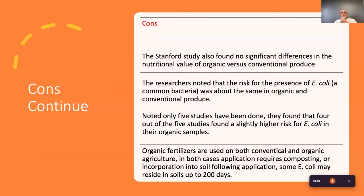Another con from the Stanford study: no significant difference in nutritional value versus conventional foods. Researchers also noted that the risk for E. coli presence was pretty much the same for commercial versus organic agriculture in a small study of five studies. E. coli is fecal coliform bacteria, very common in manures, which are used on both commercial and organic operations. The risk was found to be low in both. In both cases, manure is required to be either composted or applied and incorporated into the soil. Some E. coli bacteria can stay in the soil for up to 200 days, meaning you may see E. coli on lettuce in either system, as was the case a few years ago in California.